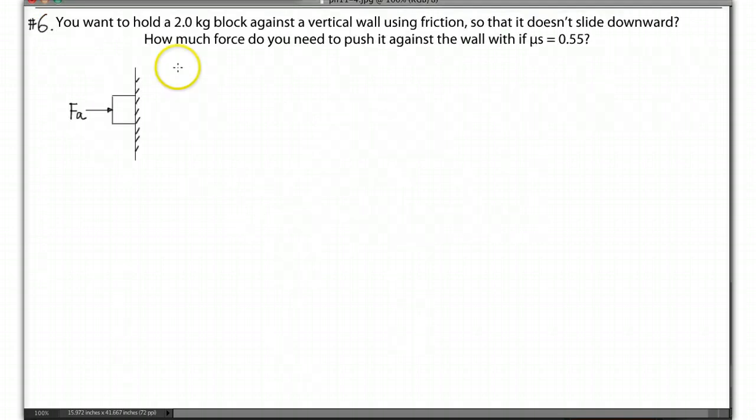Okay, question number 6. There is a vertical wall, and you want to hold a block with mass 2.0 kg against the vertical wall. And you can hold it because of the friction, so you don't want it to slide downwards. And then the question asking is how much force do you need to push it against the wall? If the coefficient of static friction between the block and the wall is 0.55.